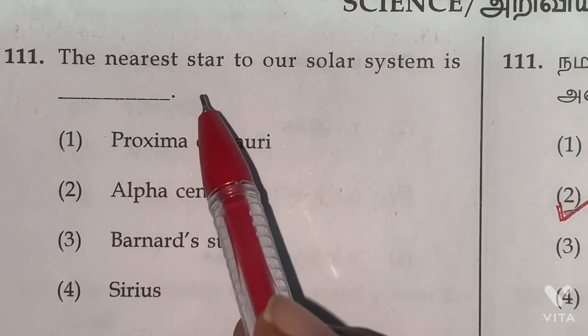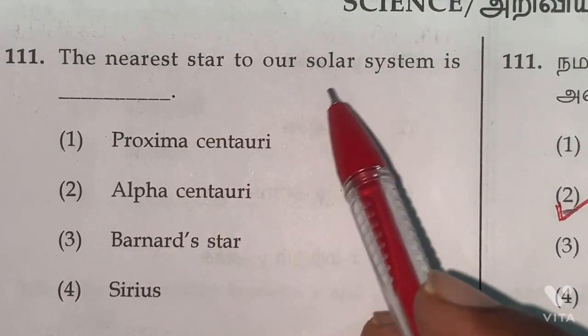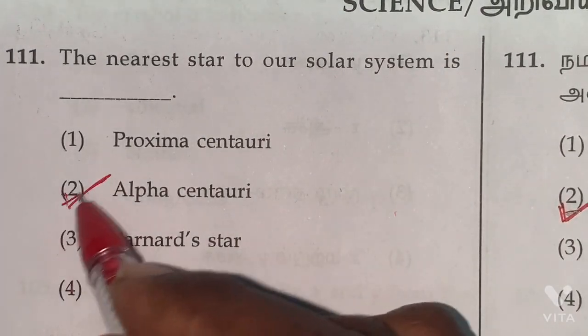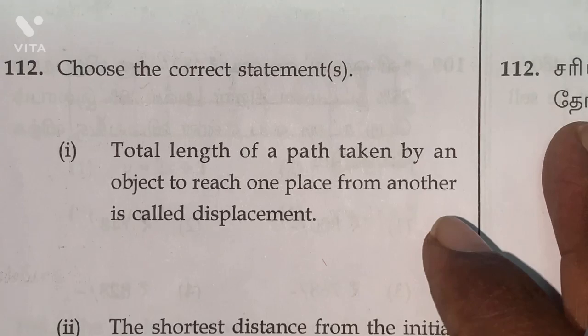The nearest star to our solar system is Alpha Centauri. Option 2 is the right answer.